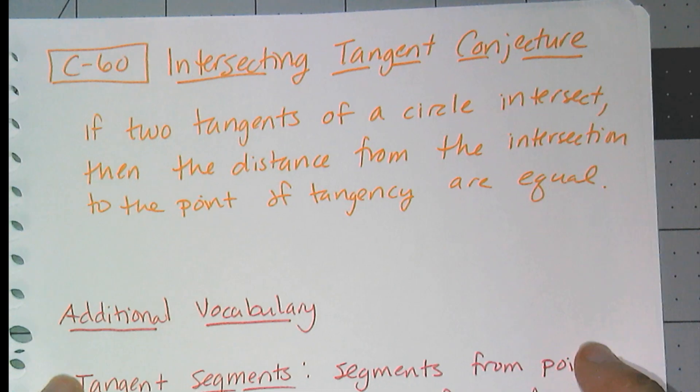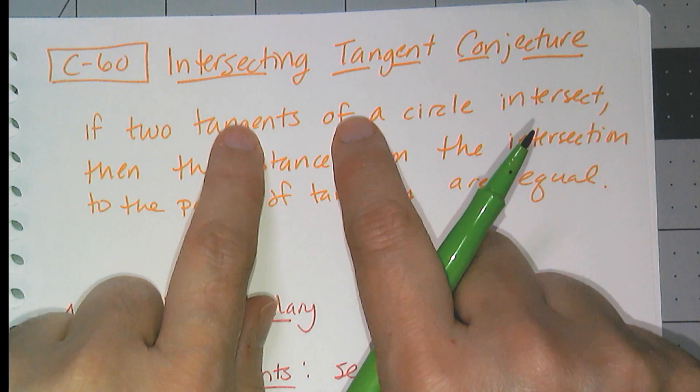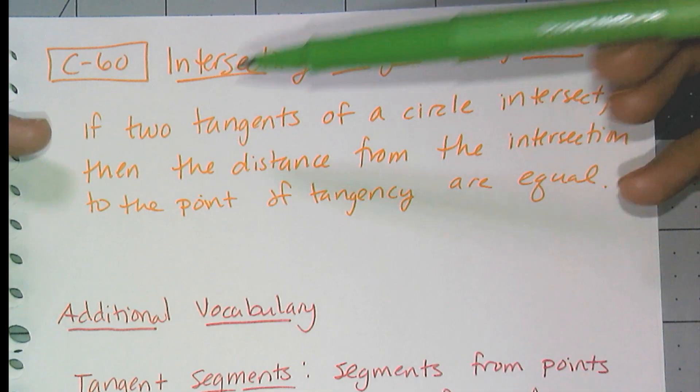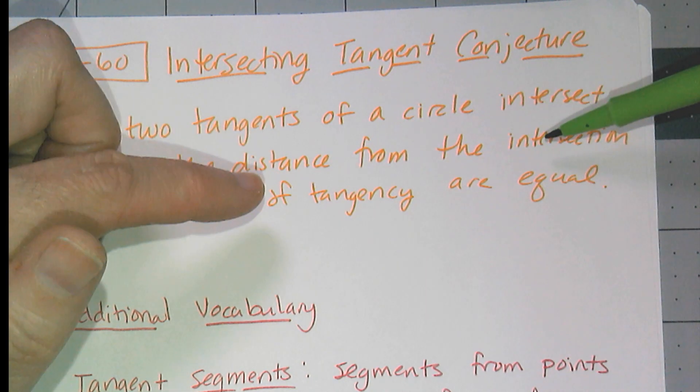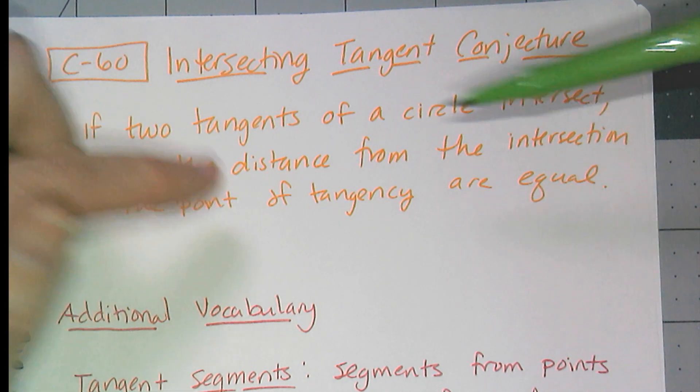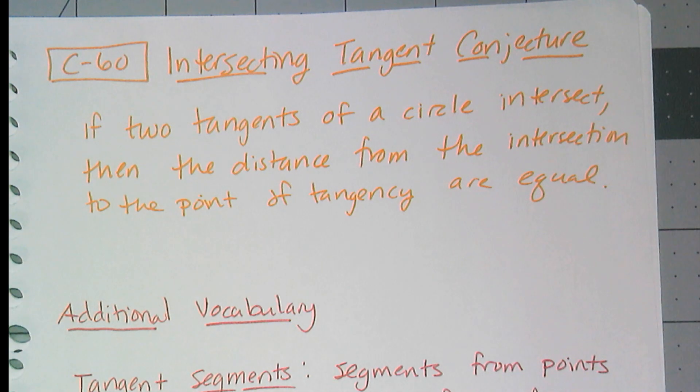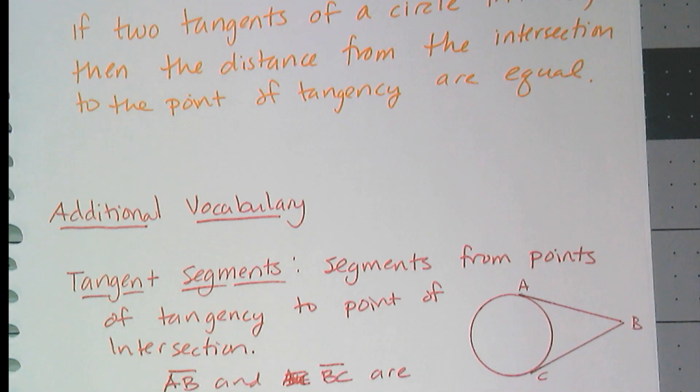Which, of course, brings us to C60, the intersecting tangent conjecture. It says that if two tangents of a circle intersect, then distance from the intersection to the point of tangency are equal. Now I'm going to add in some additional vocab to help you visualize this conjecture.